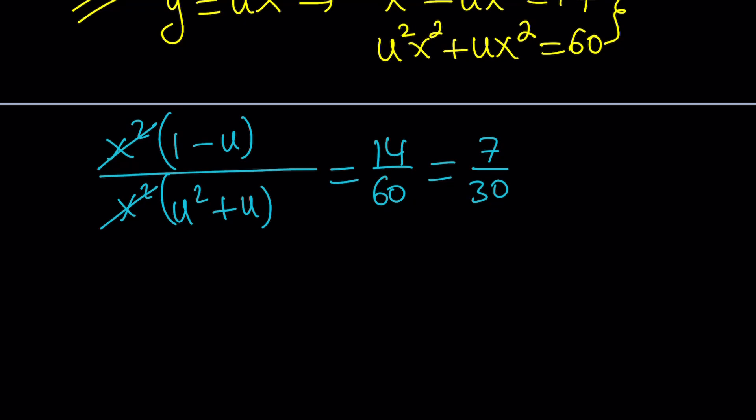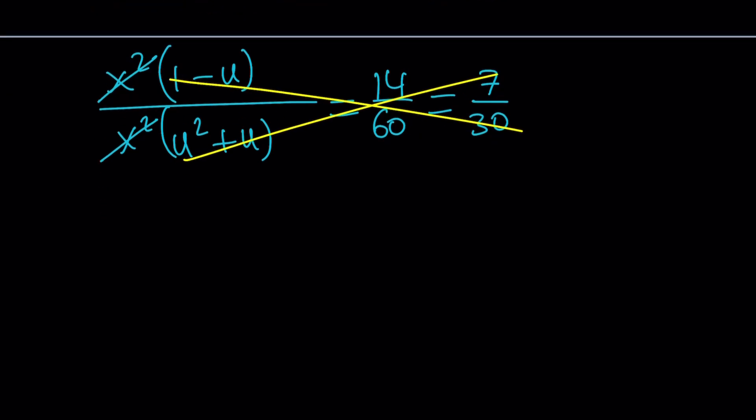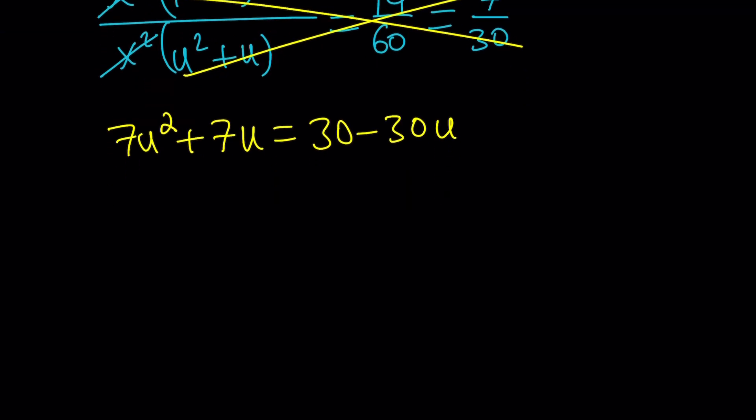When we do, we're going to get the following: 7u squared plus 7u equals 30 minus 30u. So this is a quadratic equation. Let's put everything on the same side: 7u squared plus 37u minus 30 equals 0.